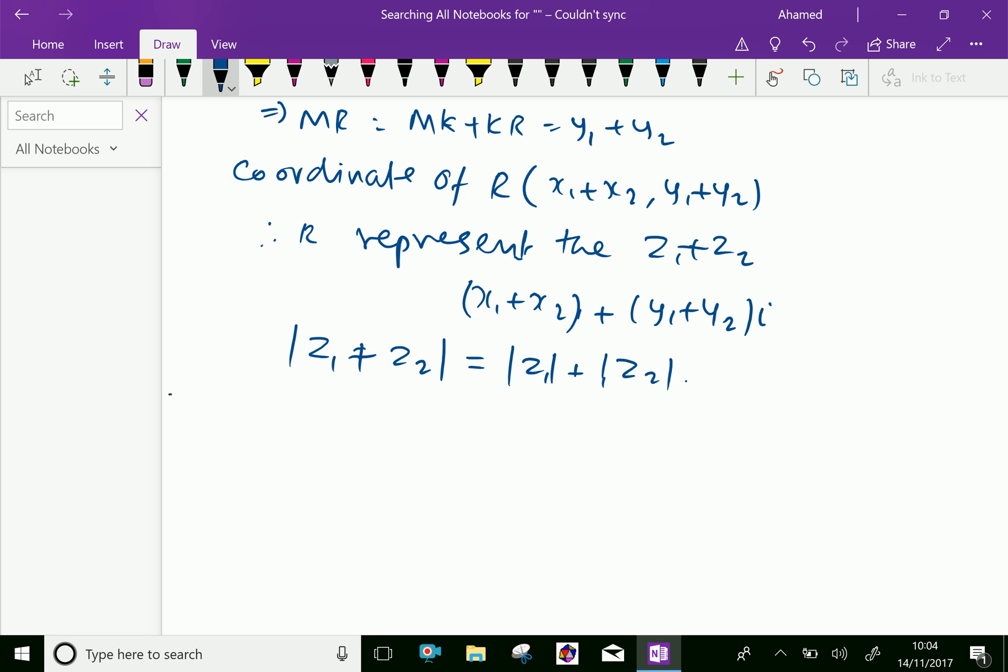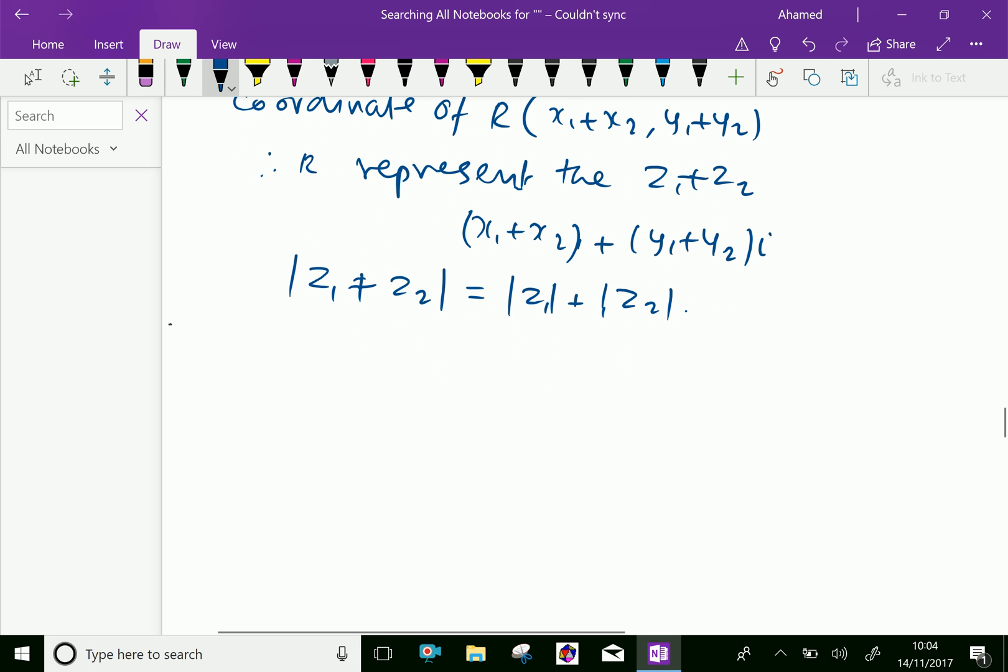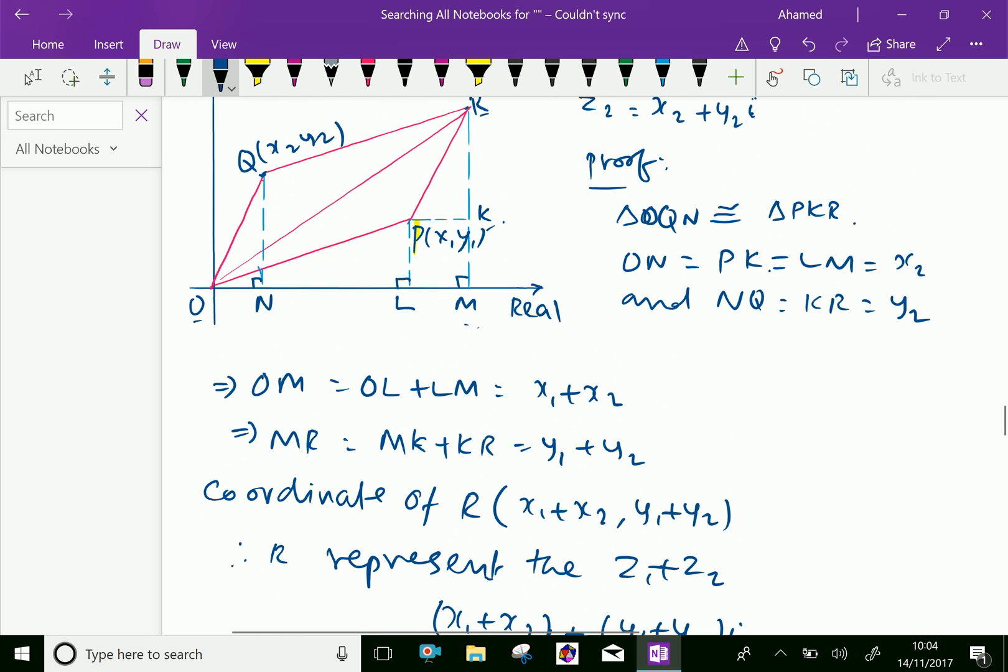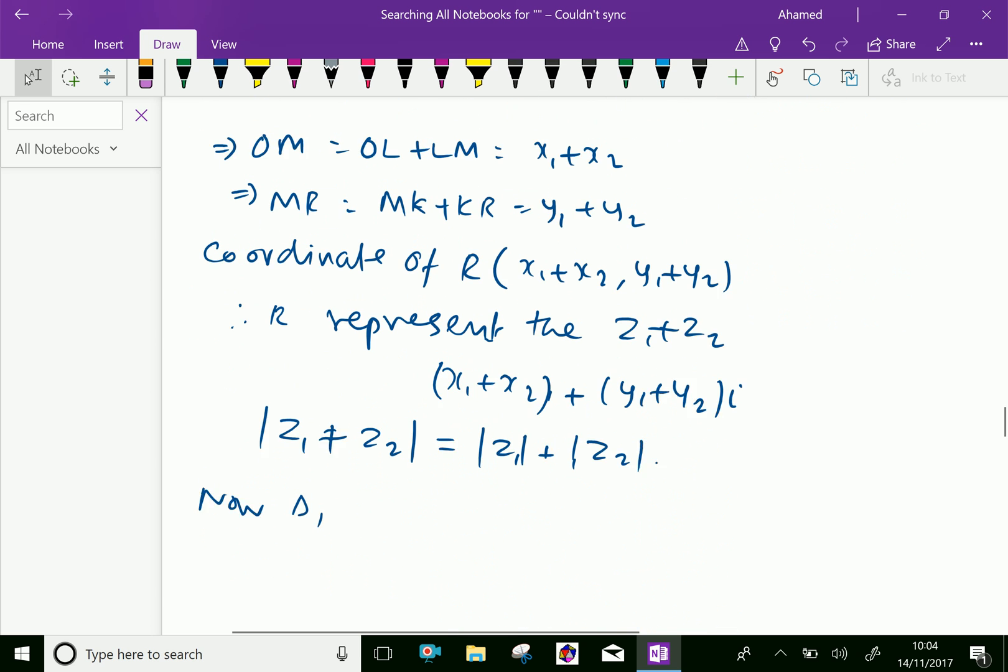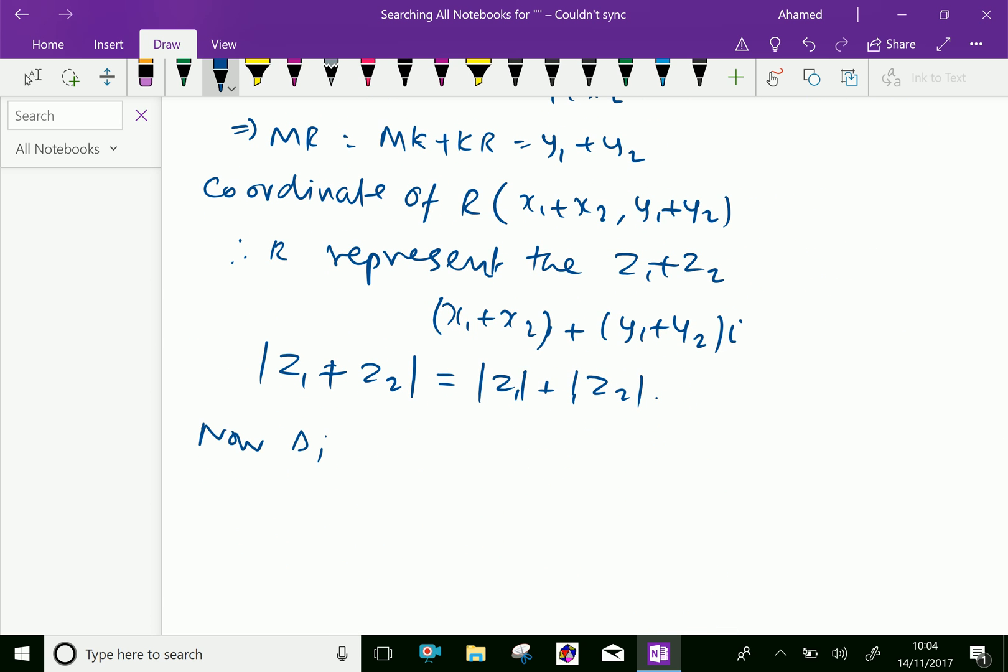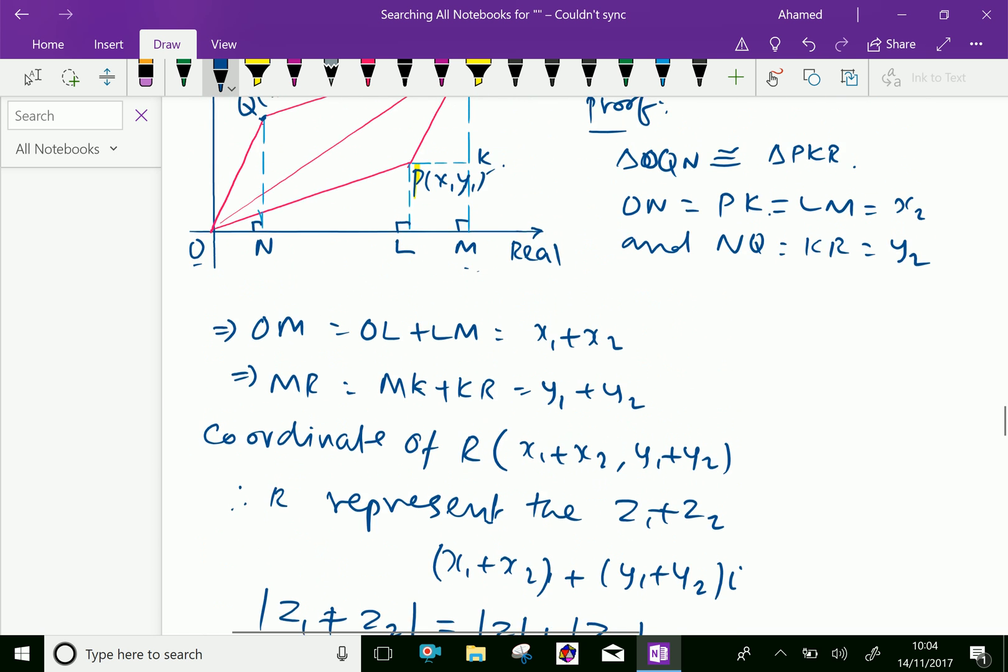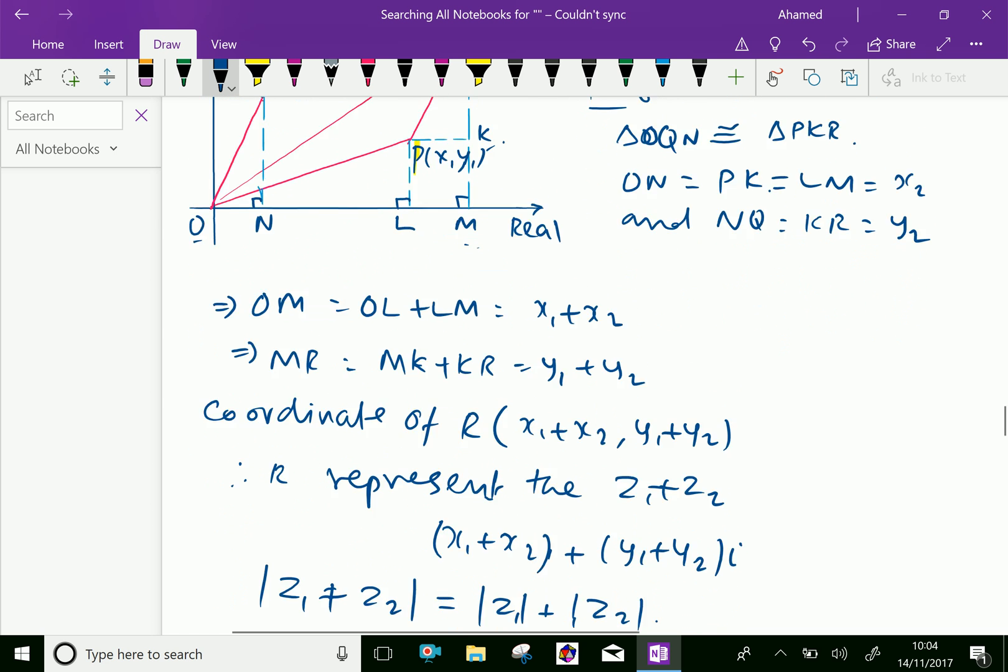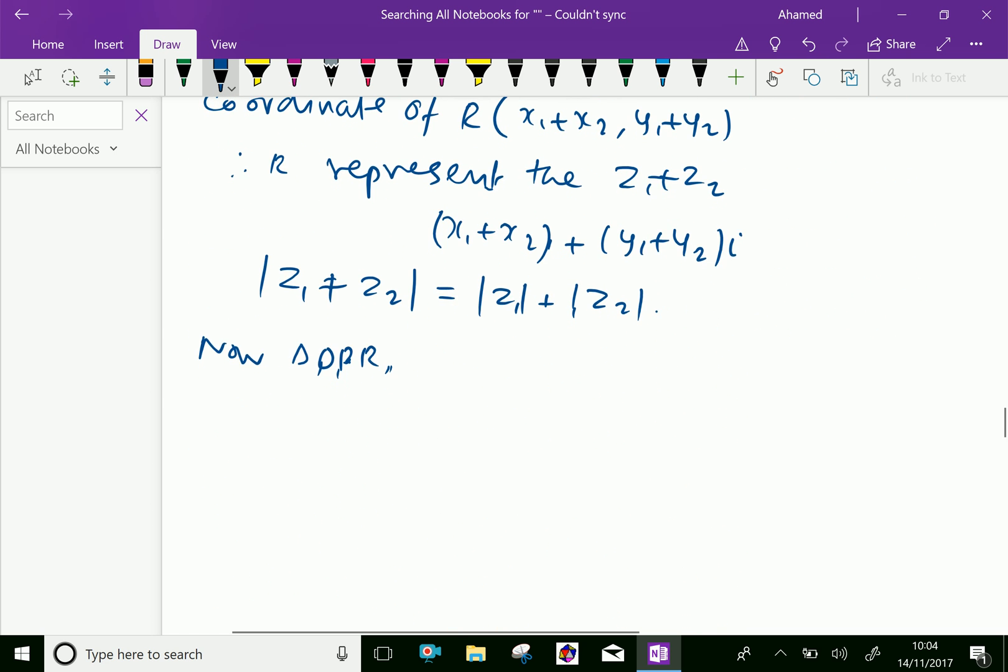Now from triangle OPR, we can say the sum of two sides is greater than the third side, meaning OP + PR > OR.